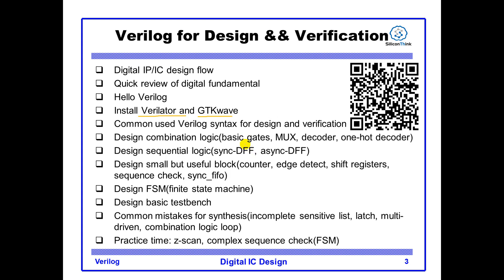As you can see, we will describe many basic building cells in digital circuits, such as basic gates, muxes, decoders, and D flip-flops with synchronous and asynchronous reset. Also covered are counters, edge detect, shift registers, sequence checkers, finite state machines, and synchronizer FIFOs. In this section, I will show you a lot of figures of circuit diagrams, RTL code, and waveforms.